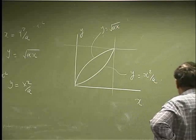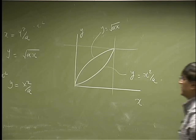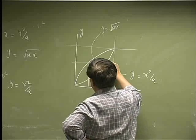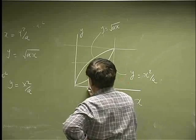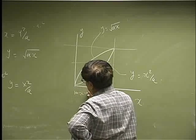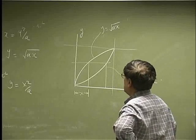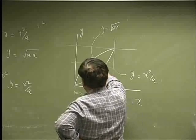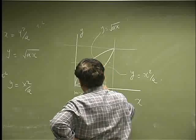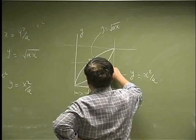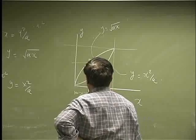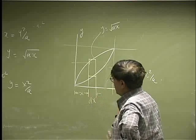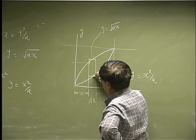It's the same diagram. Now we need to find a small rectangle. If I take a rectangle here, this rectangle is at a distance x, and it's going to have a thickness of dx.